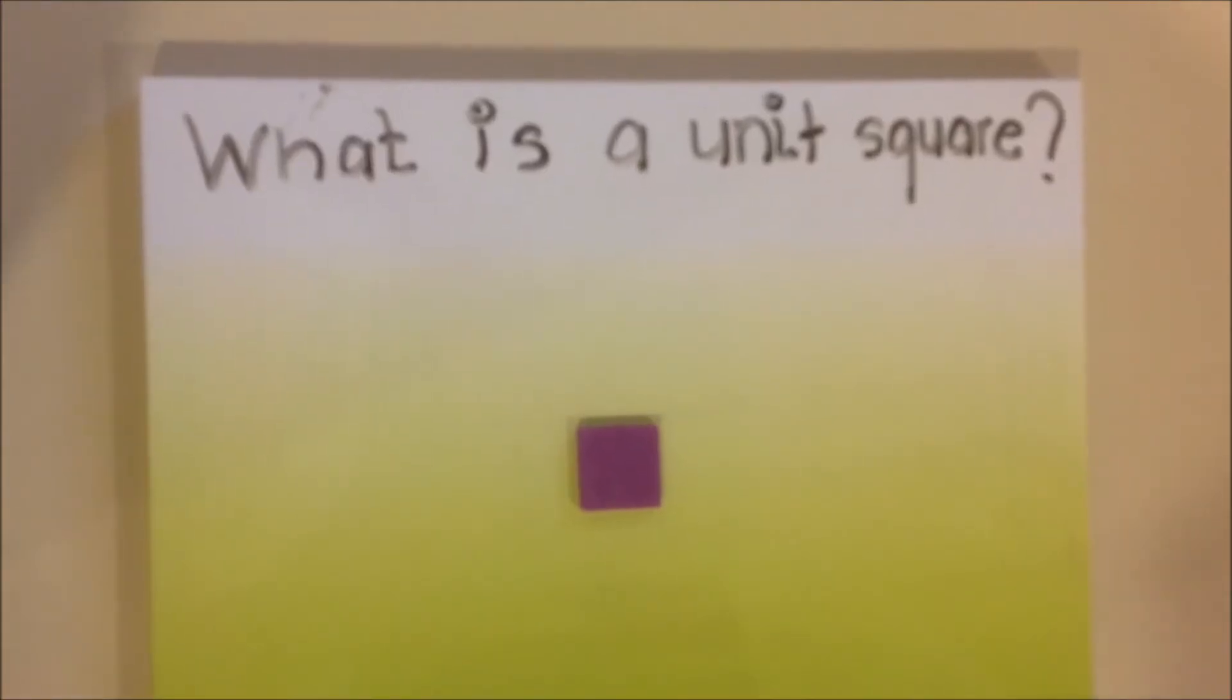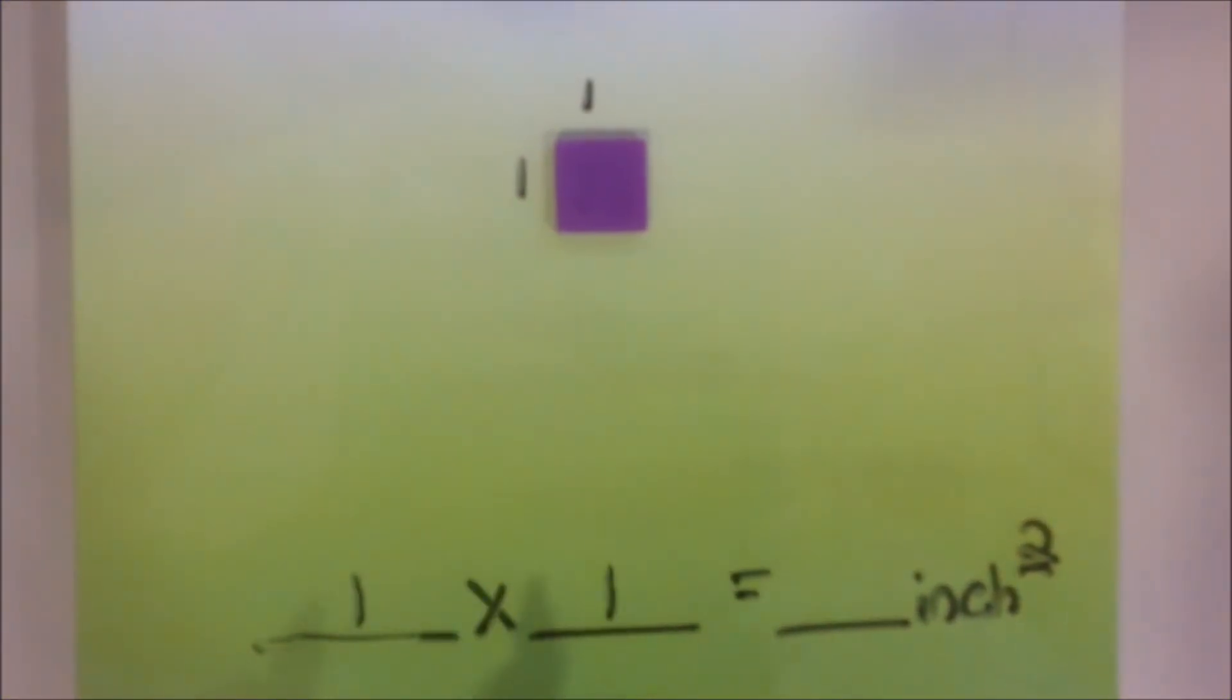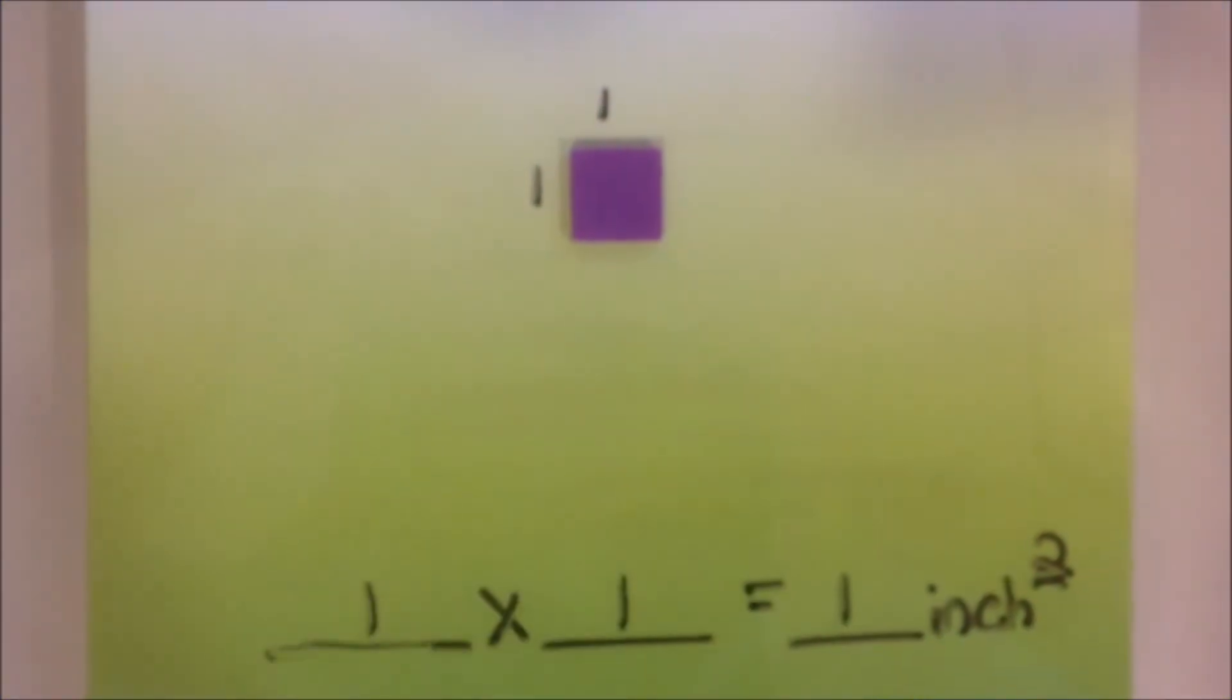What is a unit square? A unit square always has dimensions of 1 by 1. In this lesson, we are going to be using the unit of inches. Let's find the area of this unit square.